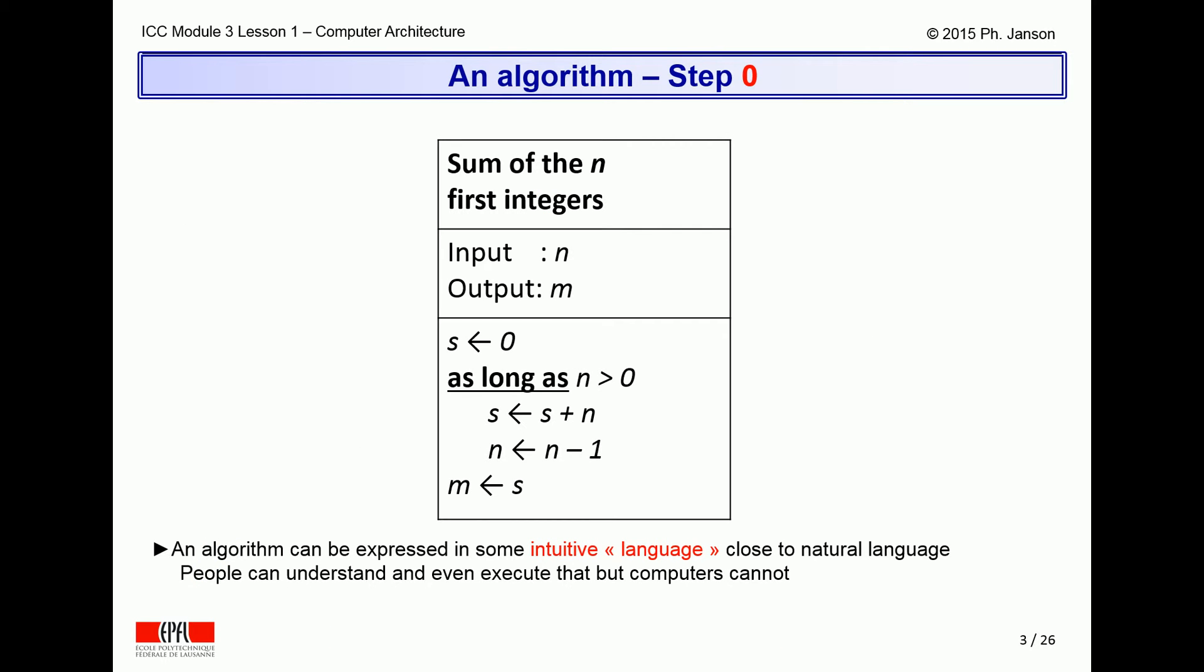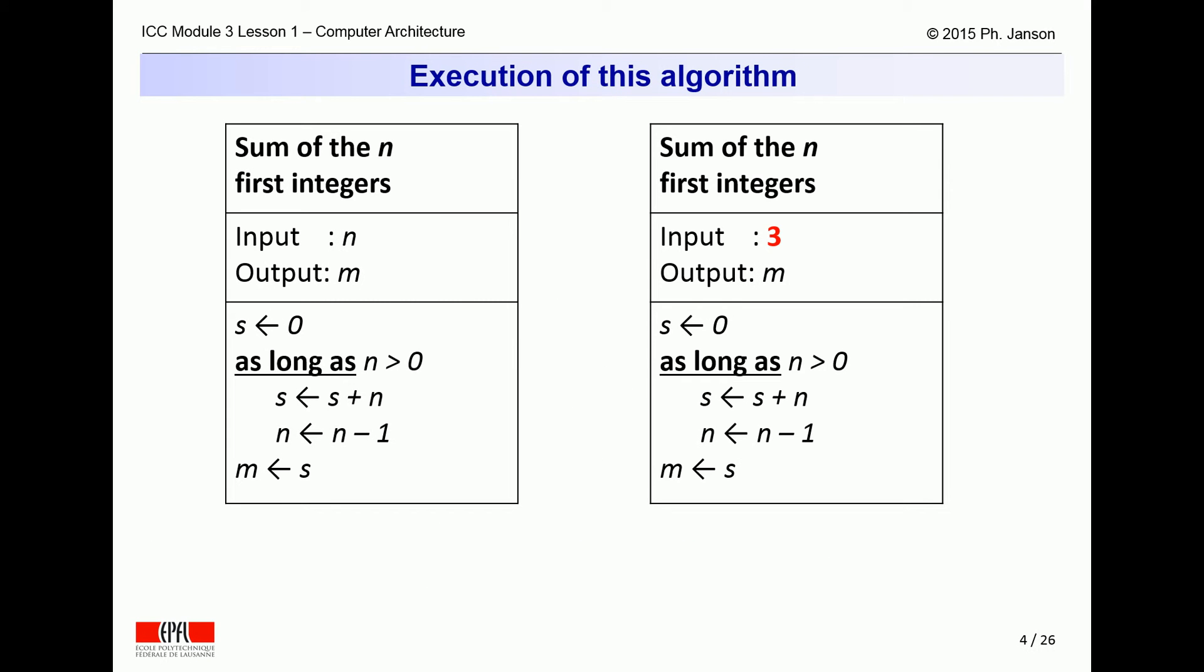It aims to explain the concept of a language called assembler, in which algorithms can be written so they can be understood by computers. The algorithm depicted on this slide is expressed in an informal language that is intuitively understandable by people, but not directly understandable by computers. It merely adds the first n integers and returns their sum as a result. A person can understand this algorithm well enough to execute it, or in other words, to simulate its behavior.